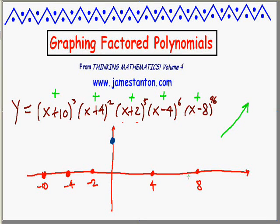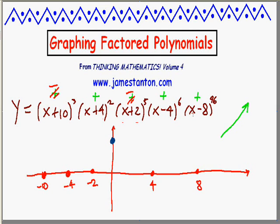That's just me sussing things out — I'm just trying to be clever without doing any work. What's another good interesting x value? How about the other extreme: x = negative a million. Now things are going to change slightly. This would be (−a million + 10)³ — a huge negative number cubed — so that would be negative. This term, something squared, stays positive. (−a million + 2)⁵ would be a negative number to the 5th power — negative. (−a million − 4)⁶ would be a negative number to the 6th power — still positive. (−a million − 8)⁹⁶ would be positive. So the net effect is: negative × positive × negative × positive × positive. With x = negative a million, I have a huge positive number. So again, the graph wants to go up and be huge and positive at the other extreme.